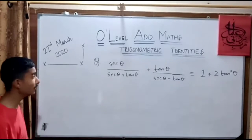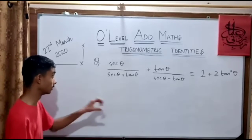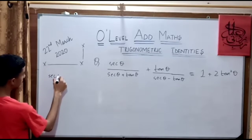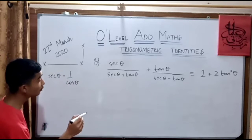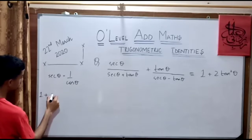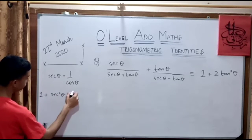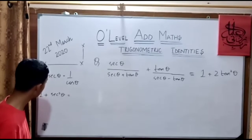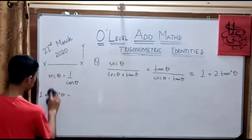This question is easy but we just have to know which identities to use. Let me note that sec theta equals 1 over cos theta. There is one more identity that can be used: 1 plus tan squared theta equals sec squared theta. We have to use these identities to solve the question.